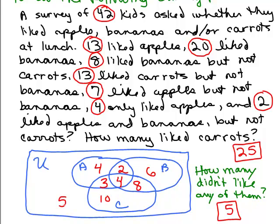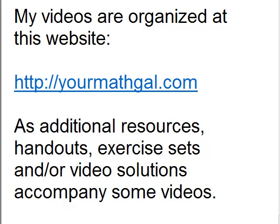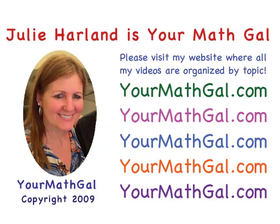I suggest you write this problem down and try it on your own. This does take a while — expect to spend about 15 minutes reading it, filling in your Venn diagram, answering the questions, and checking. It's important to check because if you don't verify all of the clues, you might have a mistake. Please visit my website at yourmathgal.com where you can view all of my videos organized by topic.